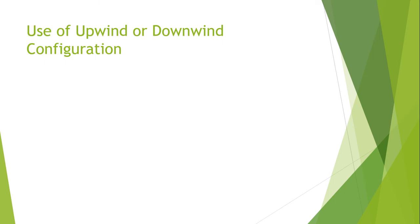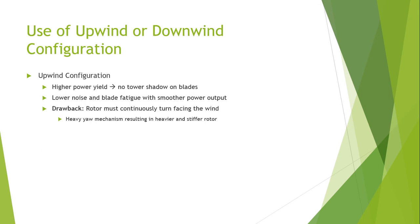Next is the use of upwind or downwind configuration. The upwind configuration has higher power yield and no tower shadow on the blades, lower noise and blade fatigue, with smoother power output — these are its advantages. However, the drawback of the upwind configuration is that the rotor must continuously turn to face the wind, and the heavy yaw mechanism results in a heavier and stiffer rotor.